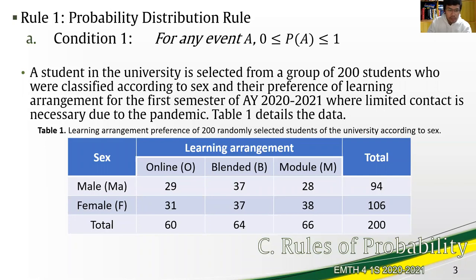We have a group of 200 students randomly selected from the whole population of a university. The 200 students were classified according to sex and their preference of learning arrangement for the first semester of academic year 2020-2021, where limited contact is necessary due to the pandemic. Students selected a learning arrangement either online, blended, or module. Likewise, they were classified as male or female.